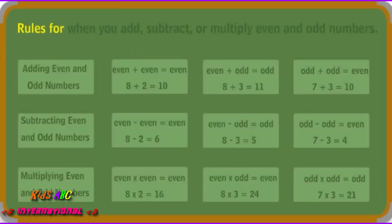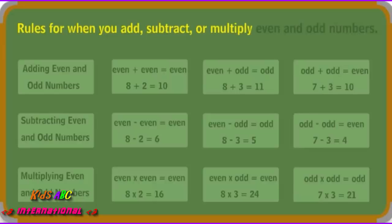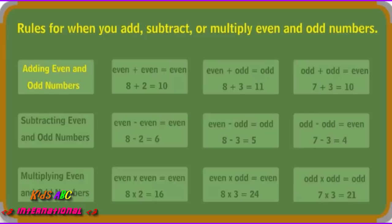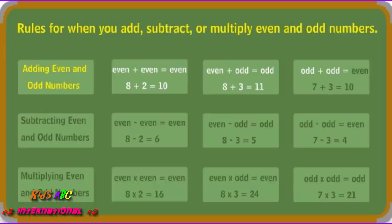Rules for when you add, subtract, or multiply even and odd numbers. Adding even and odd numbers: even plus even equals even, even plus odd equals odd, odd plus odd equals even.